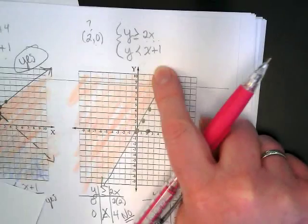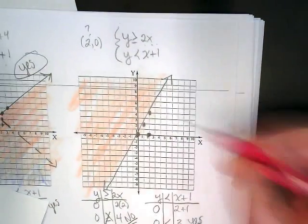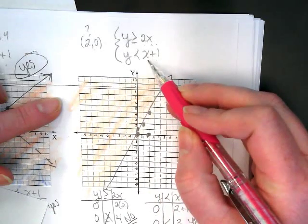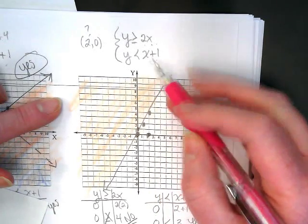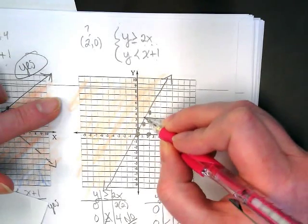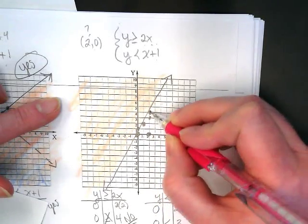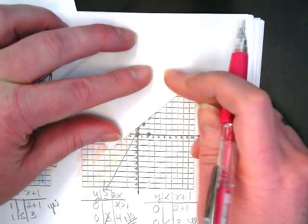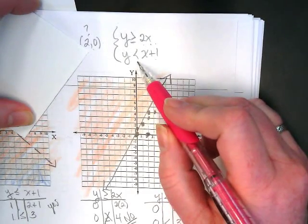Now we're going to graph the second one. We're starting at the plus 1. What's our slope here? 1 over 1. I'm going to go up 1 over 1. Up 1 over 1. Oops, I forgot. Dashed or dotted. Solid. I'm sorry. That's the same thing. Dashed or solid.